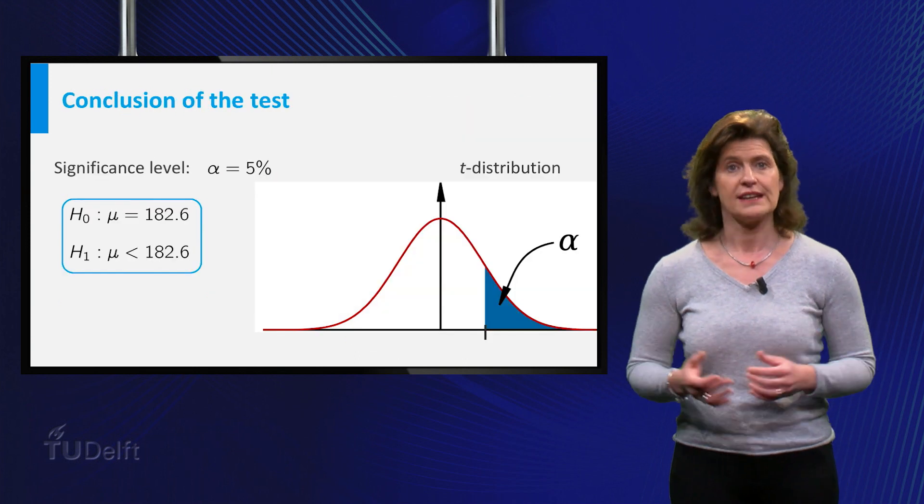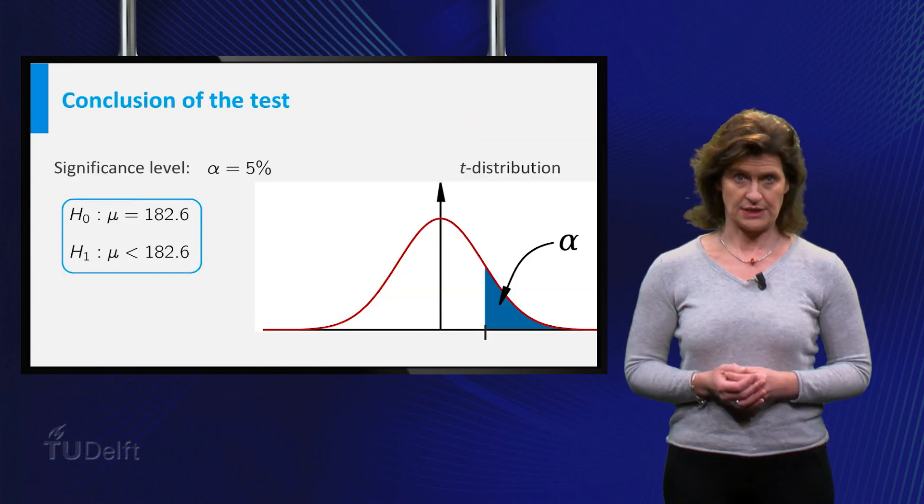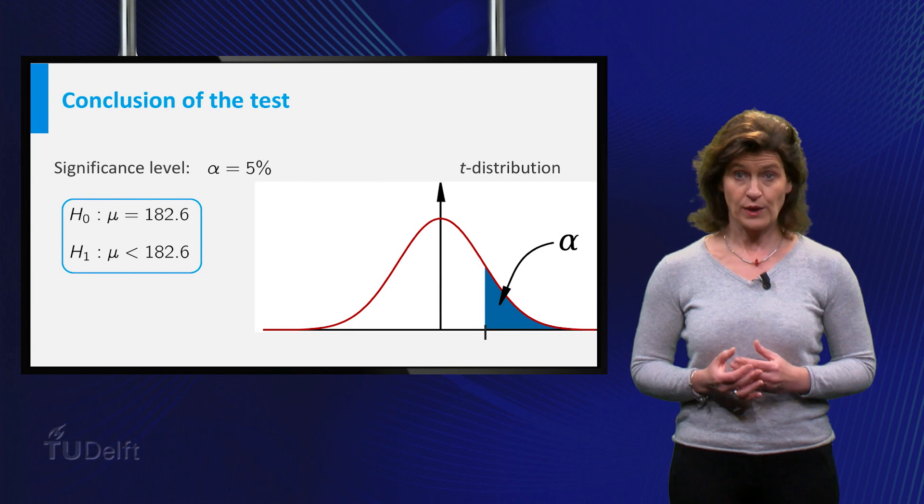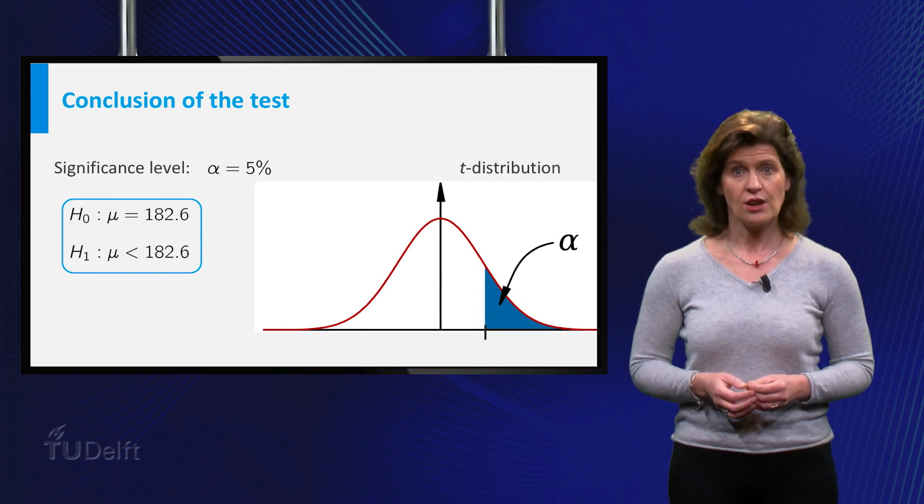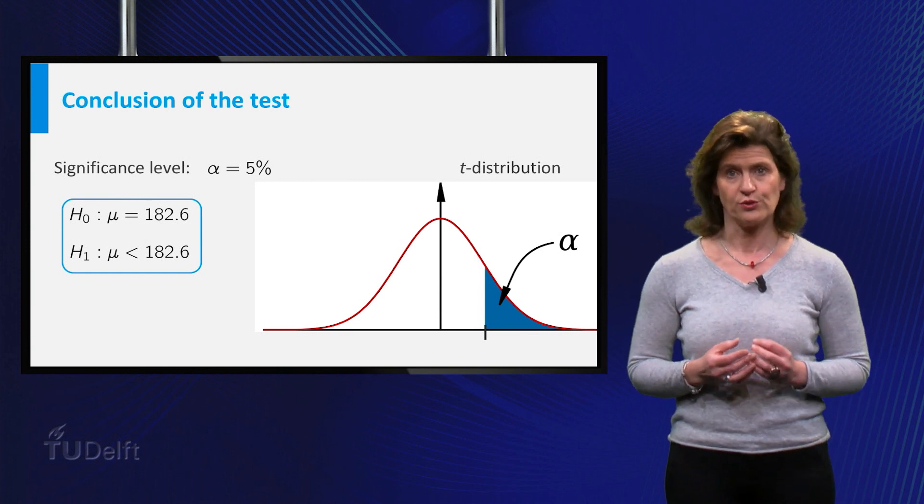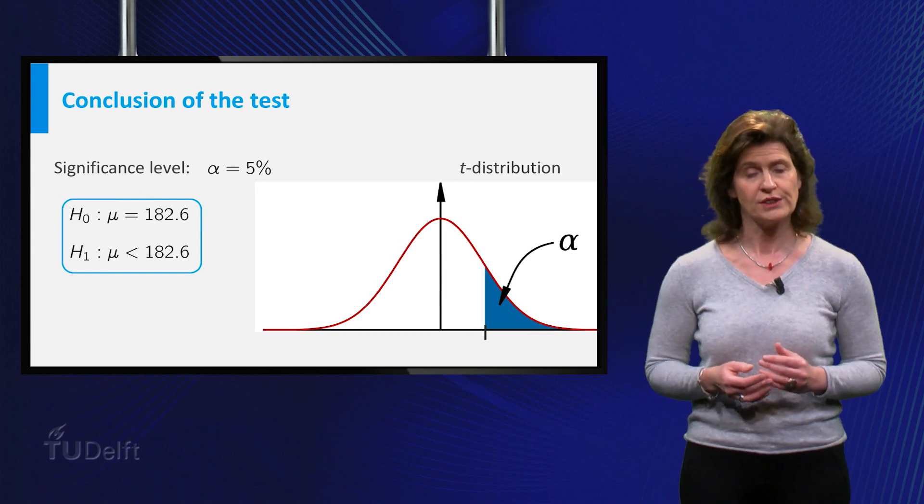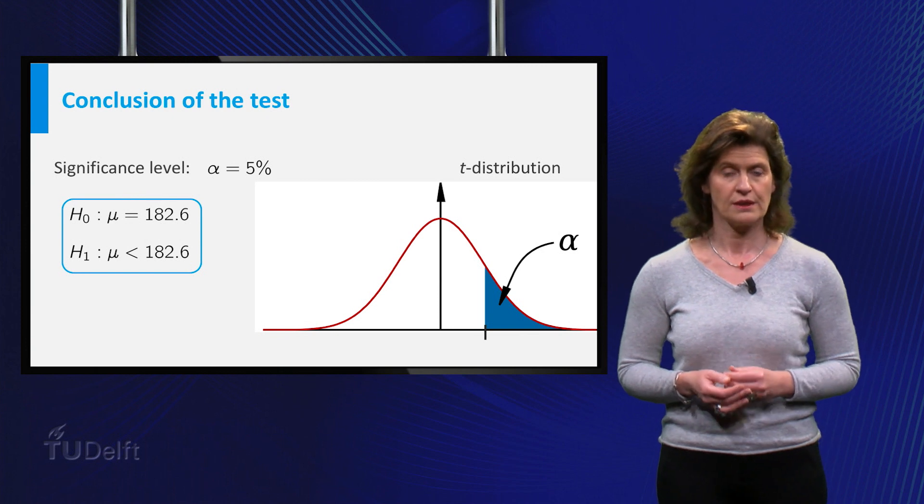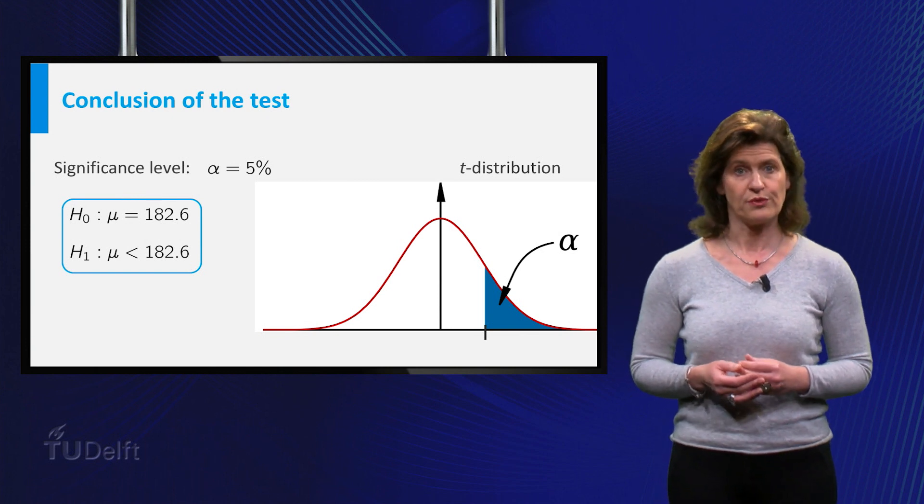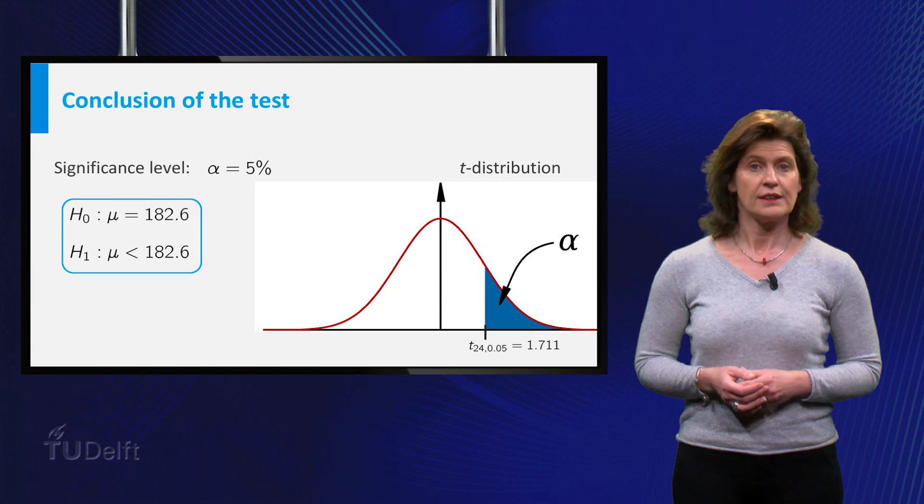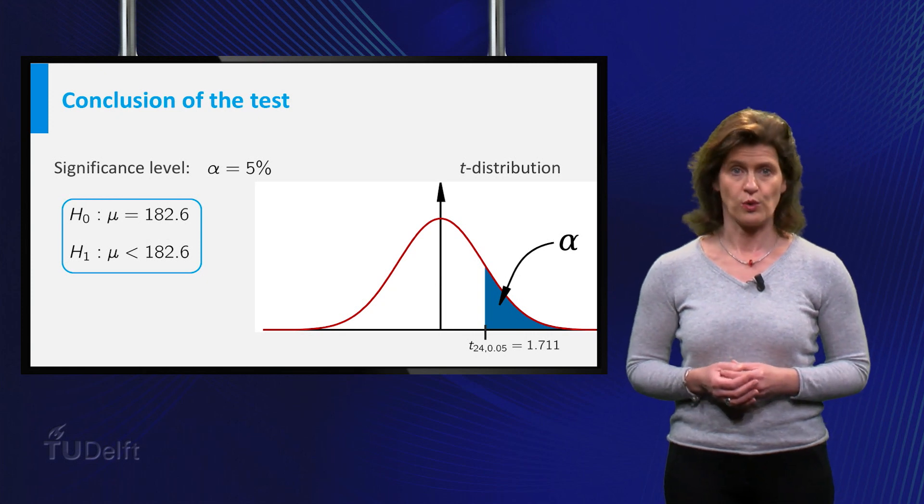Let's perform the test at a significance level of 5 percent. To decide whether you reject the null hypothesis, you have to compare the outcome of your test statistic t to the critical value of the t-distribution with 24 degrees of freedom. This critical value can be found in a table. In this case it is 1.711.